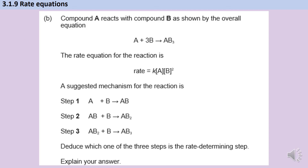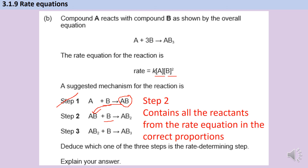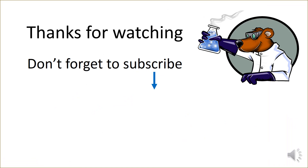In the final example they've used A's and B's. The rate equation has first order A and second order B, so I'm looking for a rate determining step with one mole of A and two moles of B. Step one only has one mole of B so it can't be that. However, the AB product from step one is used in step two — that AB represents one mole of A and one mole of B, so here is the second mole of B. Step two is the rate determining step because it contains all the reactants from the rate equation in the correct proportions.